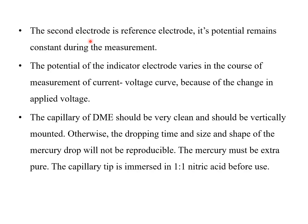Along with the dropping mercury electrode (indicator electrode), polarography uses a second electrode called the reference electrode, whose potential remains constant during measurement. The potential of the indicator electrode varies according to the applied voltage, as it measures the current-voltage curve due to changes in applied voltage.